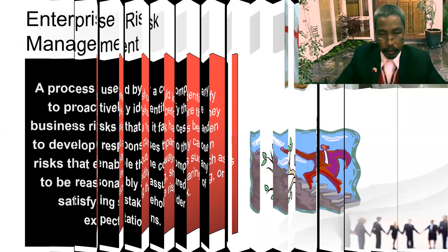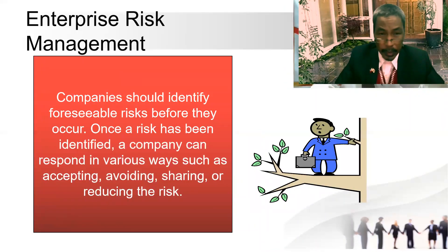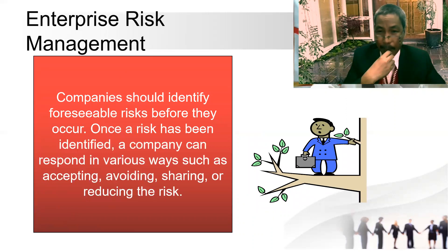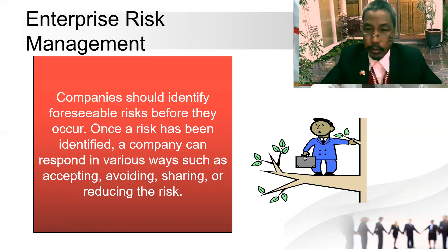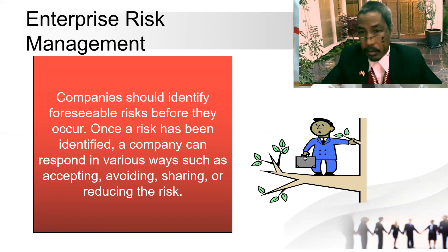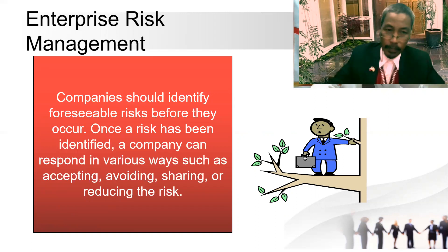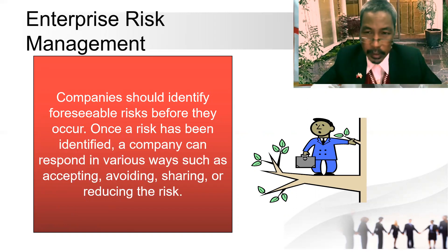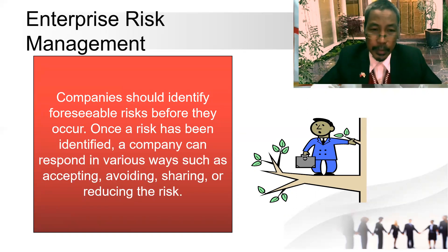We have to manage risk because if the company suffers losses due to risk, companies should identify foreseeable risks beforehand. We are going to list down the possible potential risks that our company has. Once a risk has been identified, a company can respond in various ways such as accepting, avoiding, sharing, or reducing the risk.